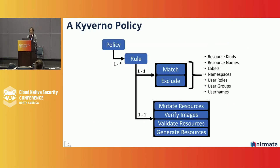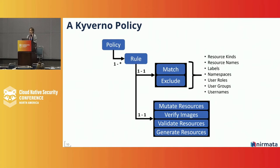If you look at a Kyverno policy, within a policy you can define one or multiple Kubernetes rules. Within each rule you can have a match and exclude block defined to select the target resource based on labels, namespaces, namespace selectors, user info, pod images, or any attributes inside the pod. In the body of the policy you can specify any of four patterns: mutate, validate, generate resources, as well as verify images used in your workload.